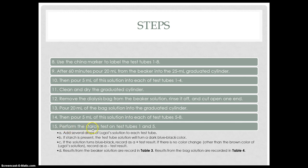We performed the starch test on test tubes 1 and 5. We added several drops of Lugol solution to each test tube. If starch was present, the test tube solution would turn a dark blue-black color, recorded as a positive test result. If there was no color change other than the brown color of the Lugol solution, we recorded it as a negative test result. Results from the beaker solution are recorded in table 3, and results from the bag solution are recorded in table 4.